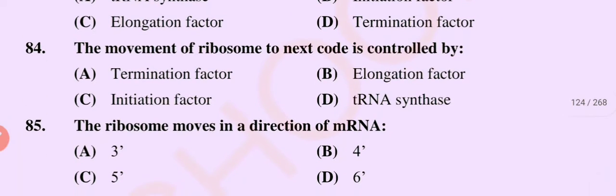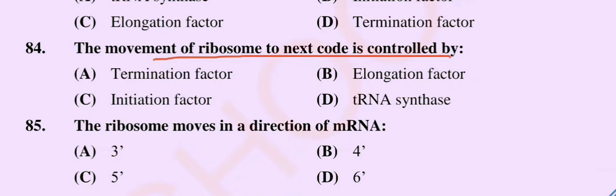Question number 84. The movement of the ribosome to the next code is controlled by: option A, termination factor; option B, elongation factor; option C, initiation factor; option D, transfer RNA synthase. The correct option is option B, elongation factor.